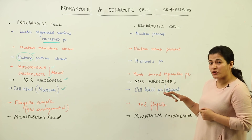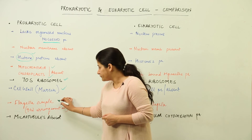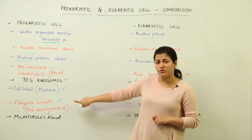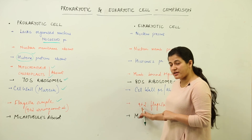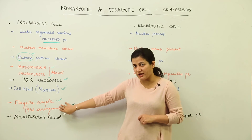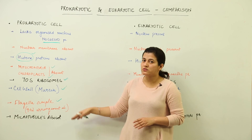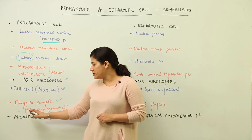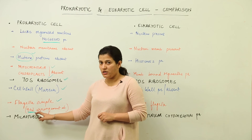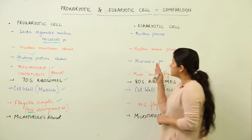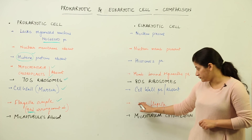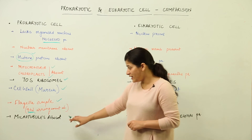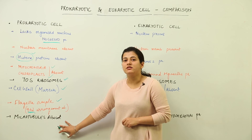The next point is the motility organelle. Every cell has to be motile. Prokaryotic cells do not have cytoplasmic streaming — remember that eukaryotic cells have cytoplasmic streaming. For motility, prokaryotic cells have a simple flagellum with no 9+2 arrangement inside. Since the eukaryotic cell is complex, its flagella are complex, featuring the 9+2 arrangement which provides motility.